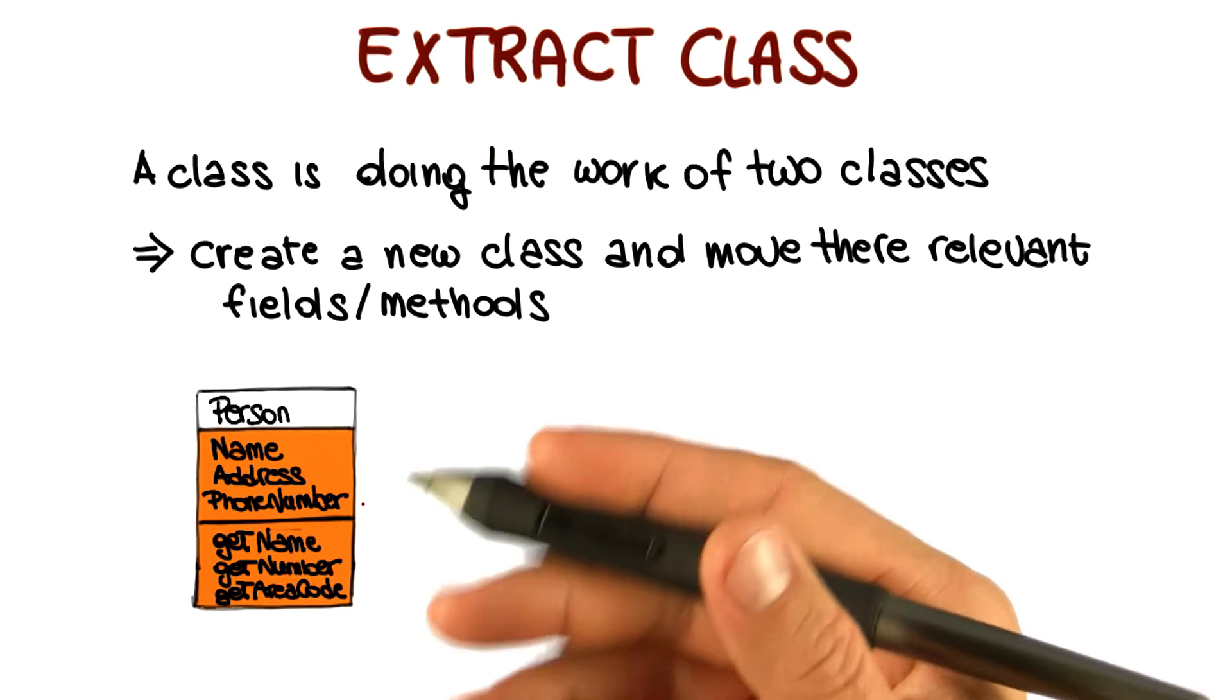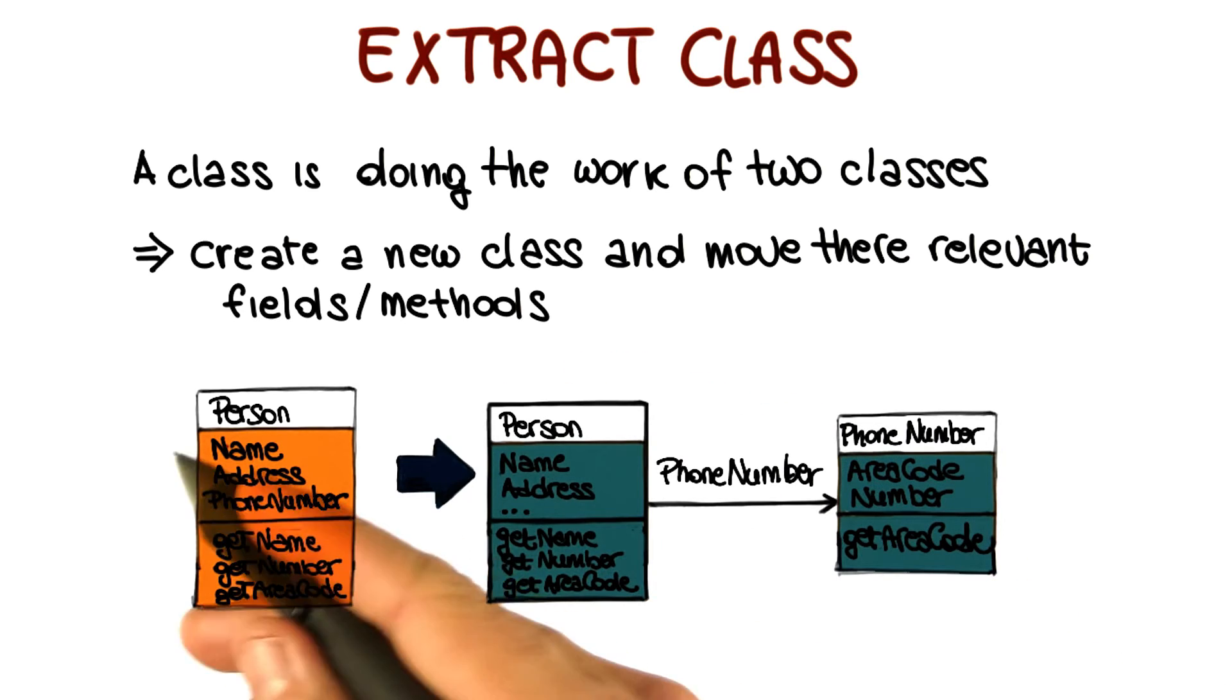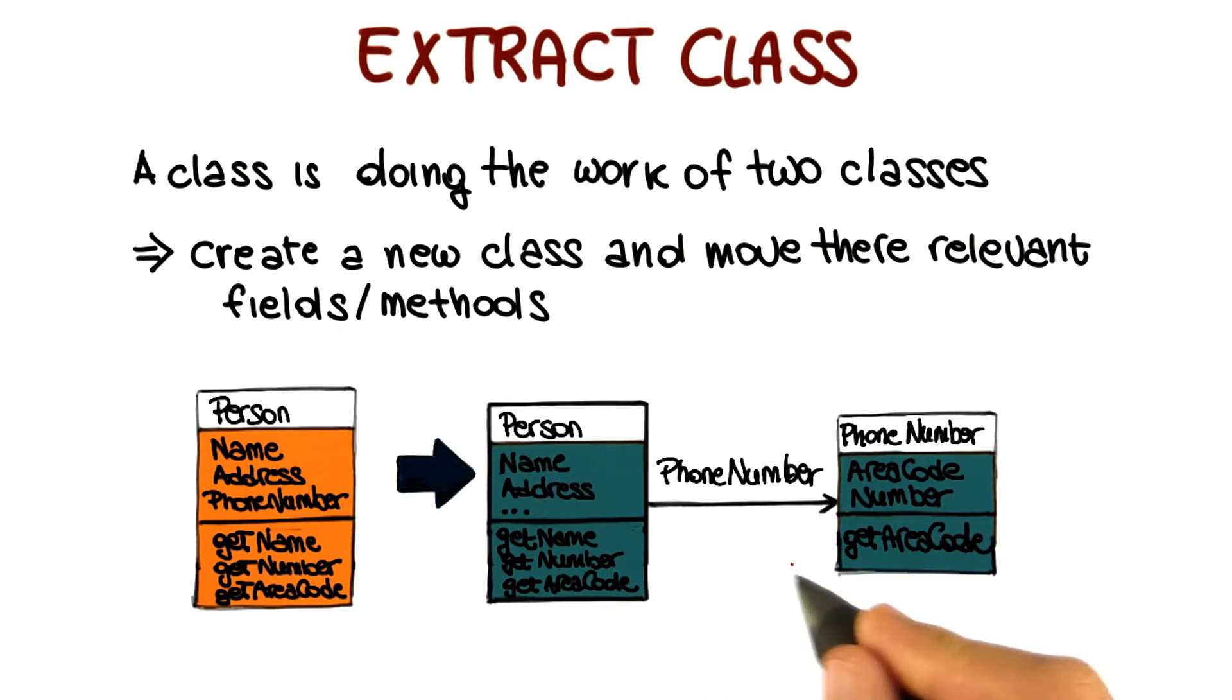So what we can do, we can actually do exactly what we described here. We split this class into a person class and the phone number class. And then we establish a use relation, so we have a reference of the phone number class into this class.